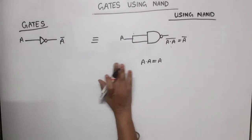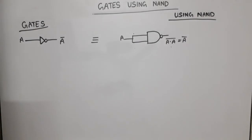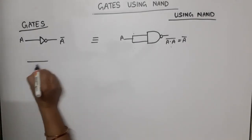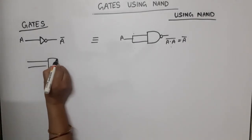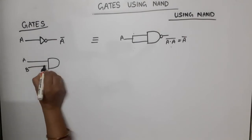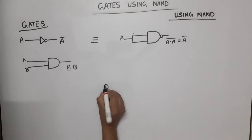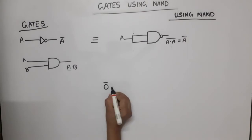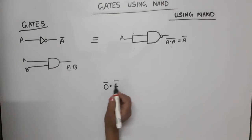Now let's do AND gate. The symbol of AND gate has two inputs A and B, and output is A dot B. Now if we take zero and find its complement, we get one.